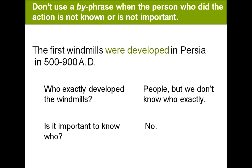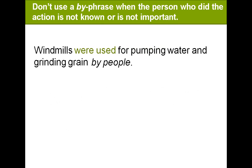The first windmills were developed in Persia in 500–900 A.D. So we don't use a 'by' phrase when the person who did the action is not known or not important.